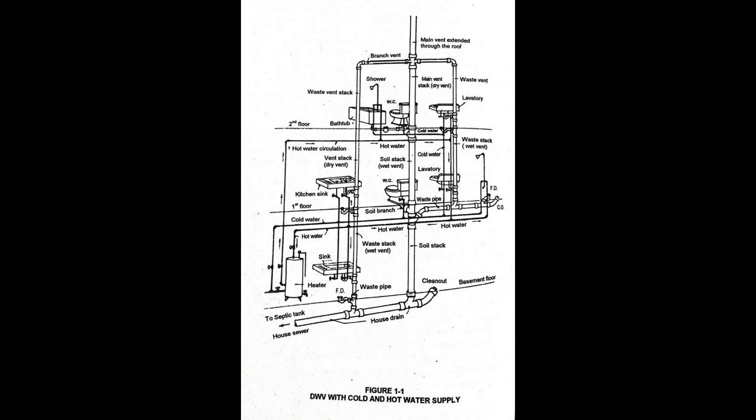Local vent pipe is a pipe on the fixture side of the trap through which vapor or foul air is removed from a room or fixture.